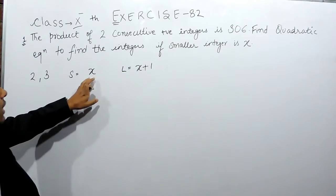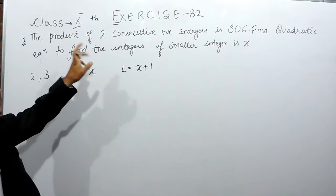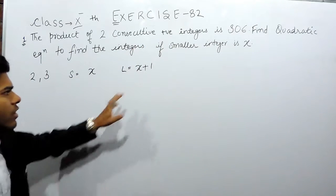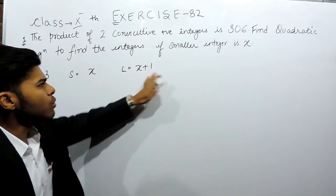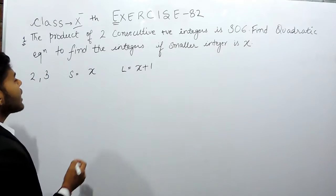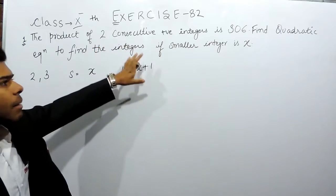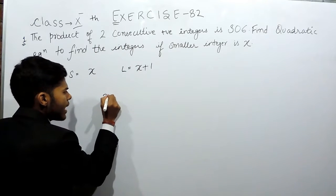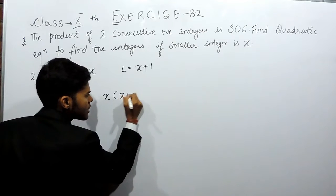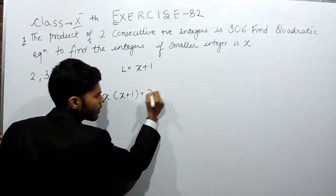We are also given that these numbers are positive. So that's why we took it as x plus 1. Now we are given that the product of these numbers is equals to 306. So x multiplied by x plus 1 is equals to 306.